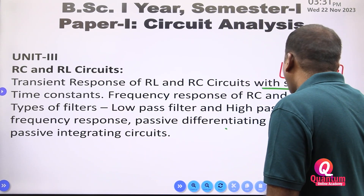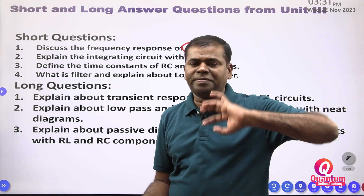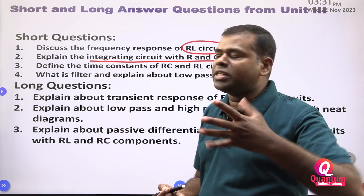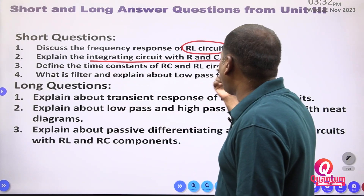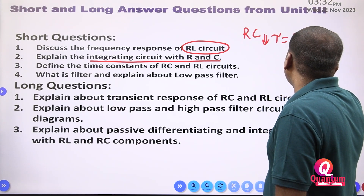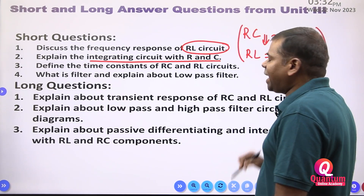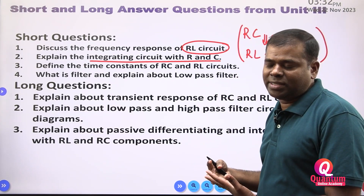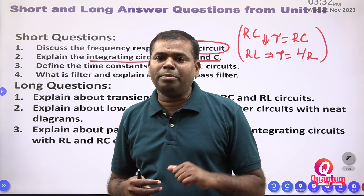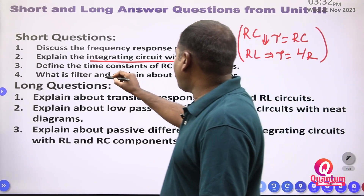Expected questions from Unit 3: Discuss the frequency response of the RL circuit, covering low pass filter and high pass filter. Explain the integrating circuit with an RC circuit. For time constants: in an RC circuit, τ = RC; in an RL circuit, τ = L/R. Define the time constant as the time taken for the current or charge to reach 63% of the maximum value. Also: what is a filter and explain about the low pass filter.